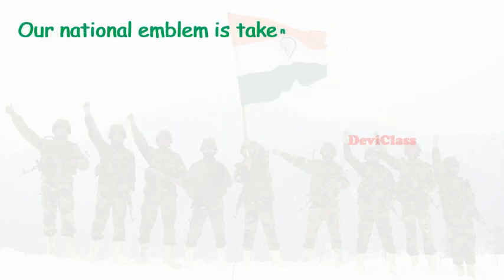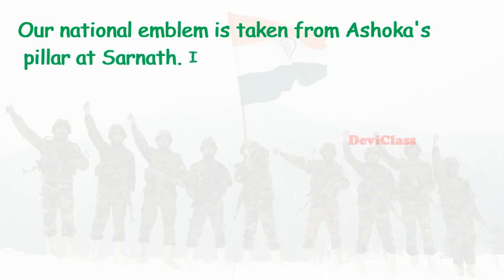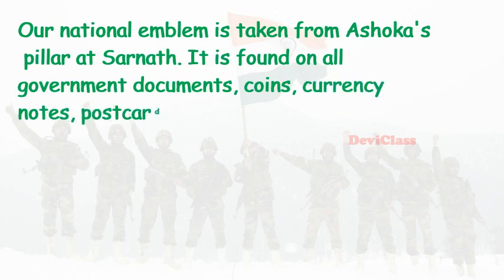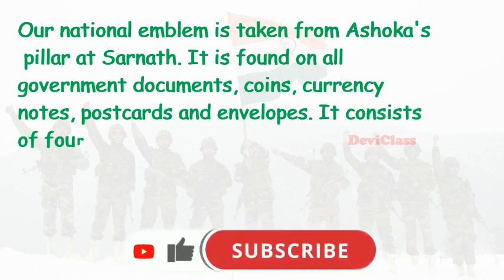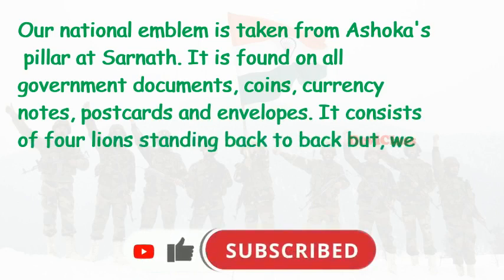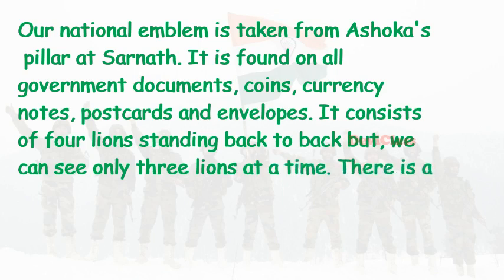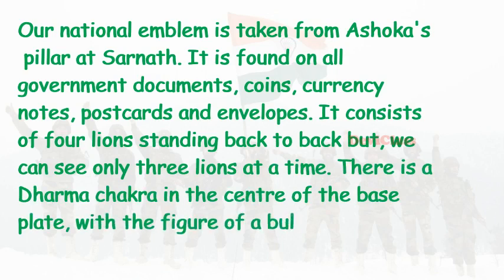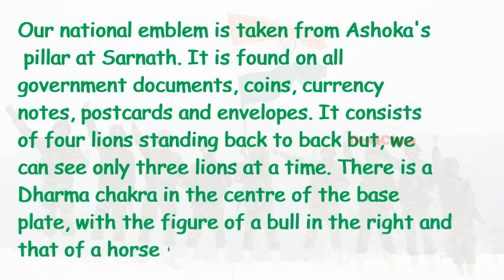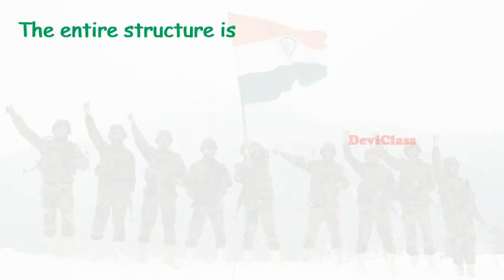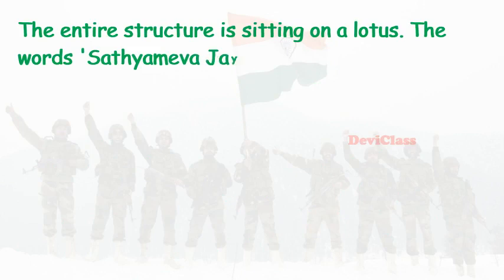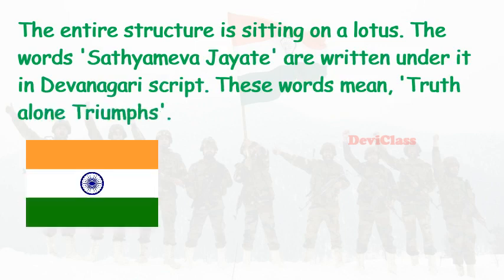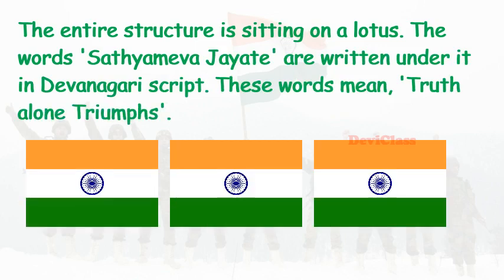Read the passage and color one flag each time you read. Our national emblem is taken from Ashoka's pillar at Sarnath. It is found on all government documents, coins, currency notes, postcards, and envelopes. It consists of four lions standing back to back, but we can see only three lions at a time. There is a Dharma Chakra in the center of the base plate, with the figure of a bull on the right and a horse on the left. The entire structure is sitting on a lotus. The words Satyameva Jayate are written under it in Devanagari script.